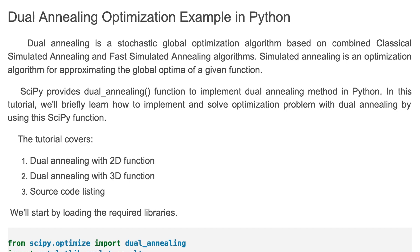The SciPy library provides a dual annealing function to implement the dual annealing method in Python. In this tutorial we'll briefly learn how to implement and solve an optimization problem with the dual annealing function. The tutorial covers dual annealing with a 2D function and a 3D function, and finally we provide the source code listing.